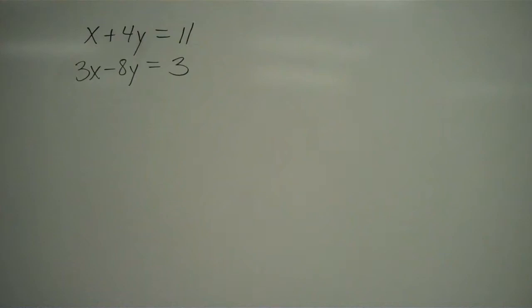With elimination, what you do is you multiply both sides of one of your equations, or sometimes both of your equations, by a constant, so that later on when you add up your two equations, one of your unknowns goes away.